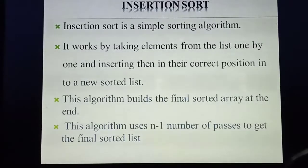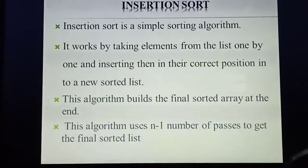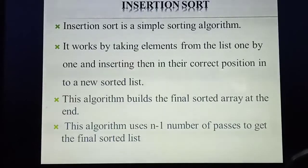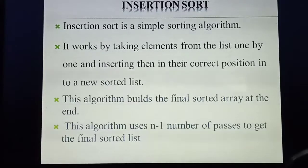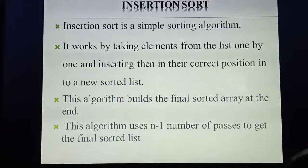How many passes are needed? n minus 1. What does n minus 1 mean? For example, if 10 elements are stored in the array, n equals 10, so n minus 1 equals 9. That means the first element you are not going to sort — from the second element only you start sorting. So how many passes are required? n minus 1, that is the number of elements minus 1.